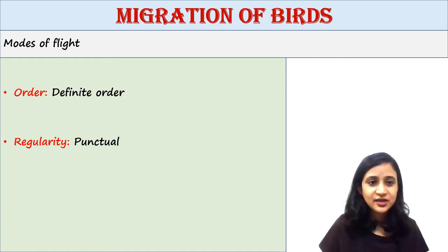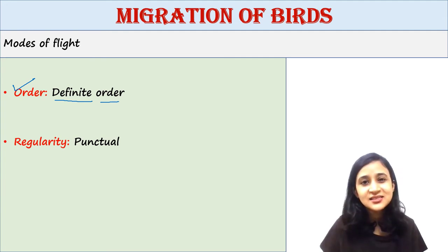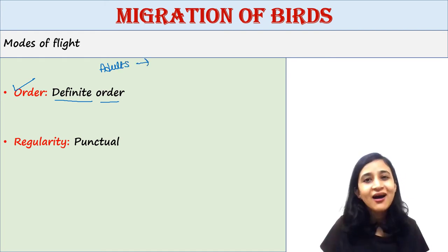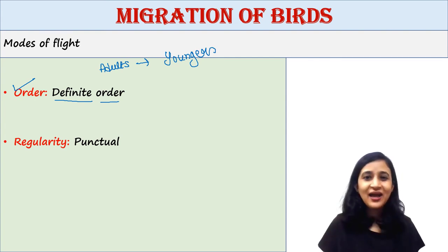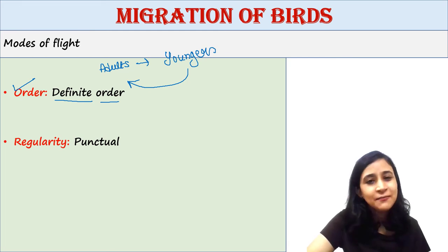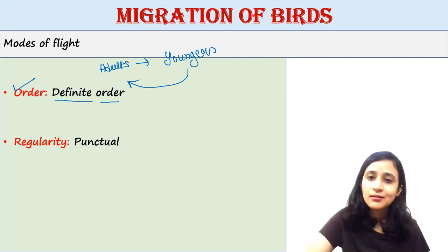Next is order of migration. During migration, birds follow a definite order. Normally the adults migrate first and they are followed by the younger birds. During the return flight, the order becomes reversed — the young birds start first and follow the same path their parents had previously followed, while their parents follow them.